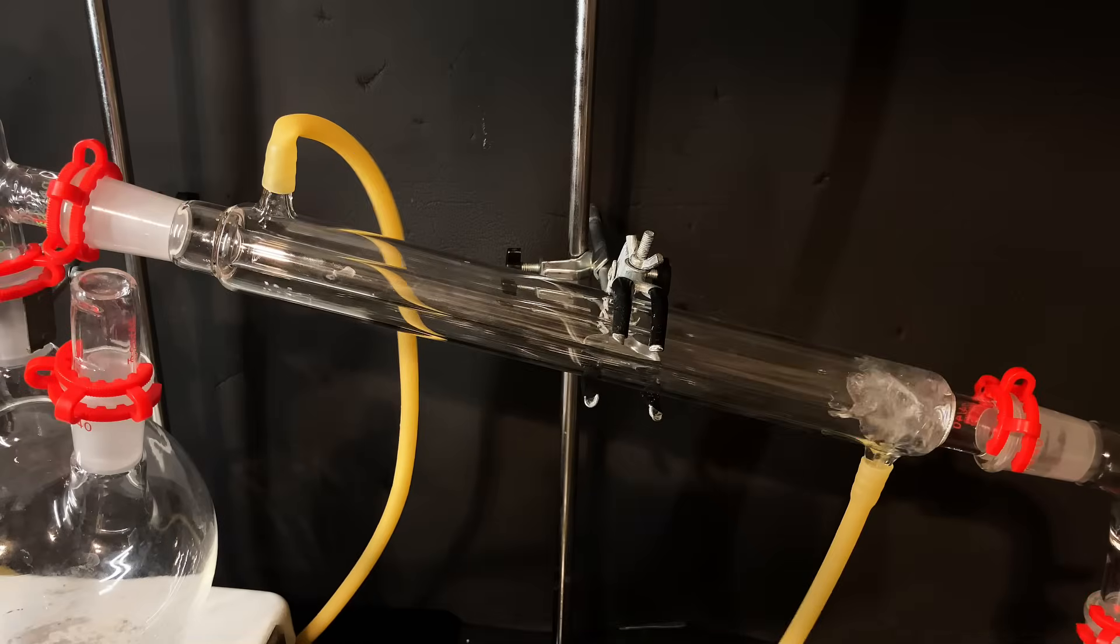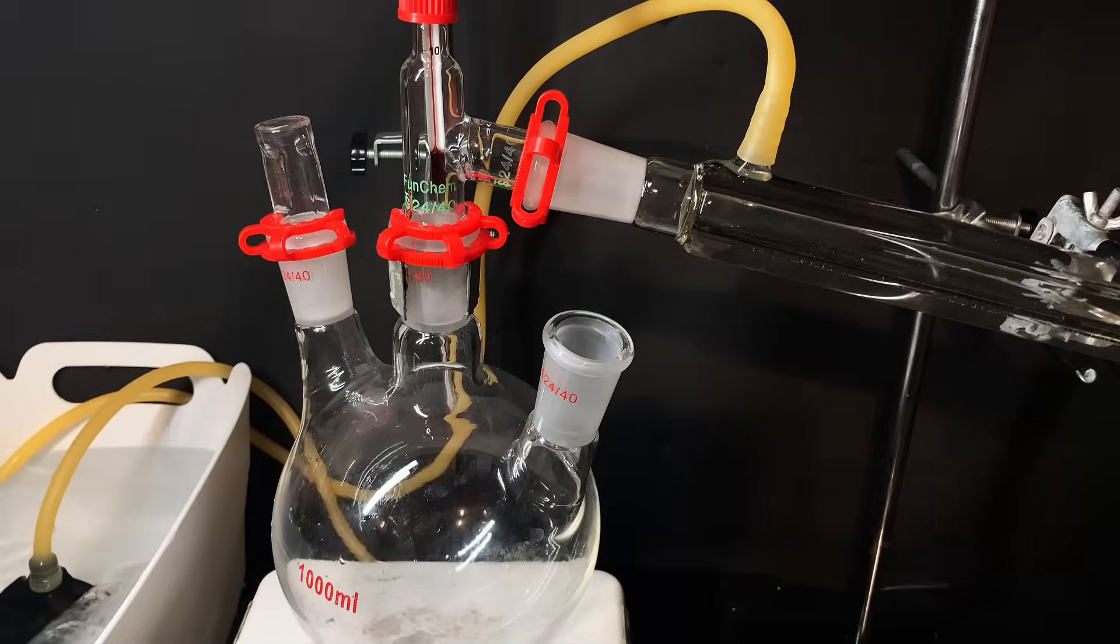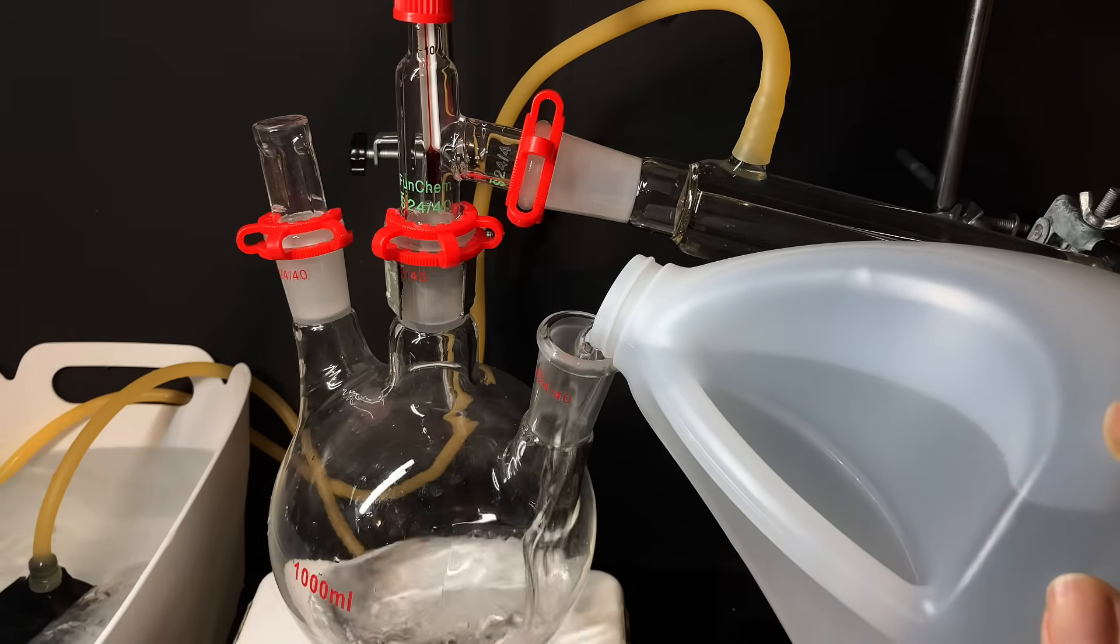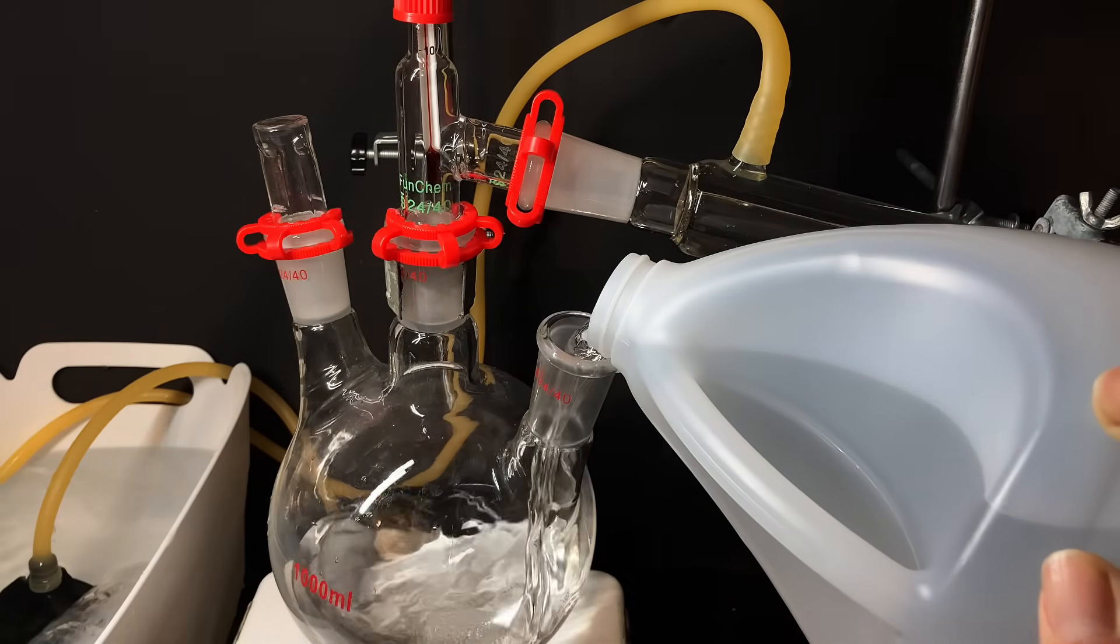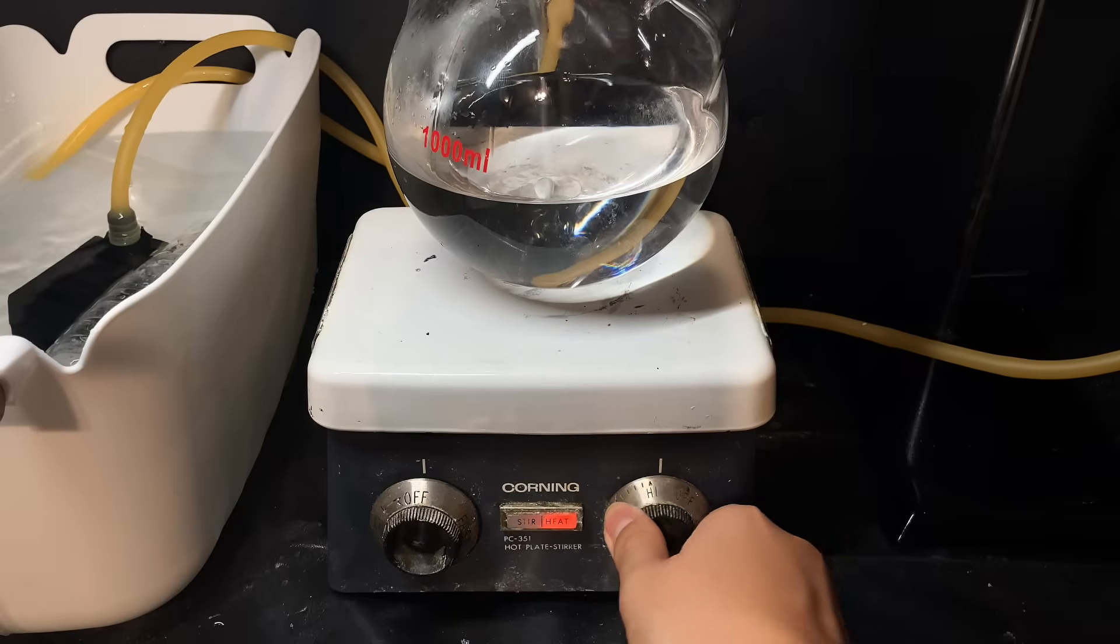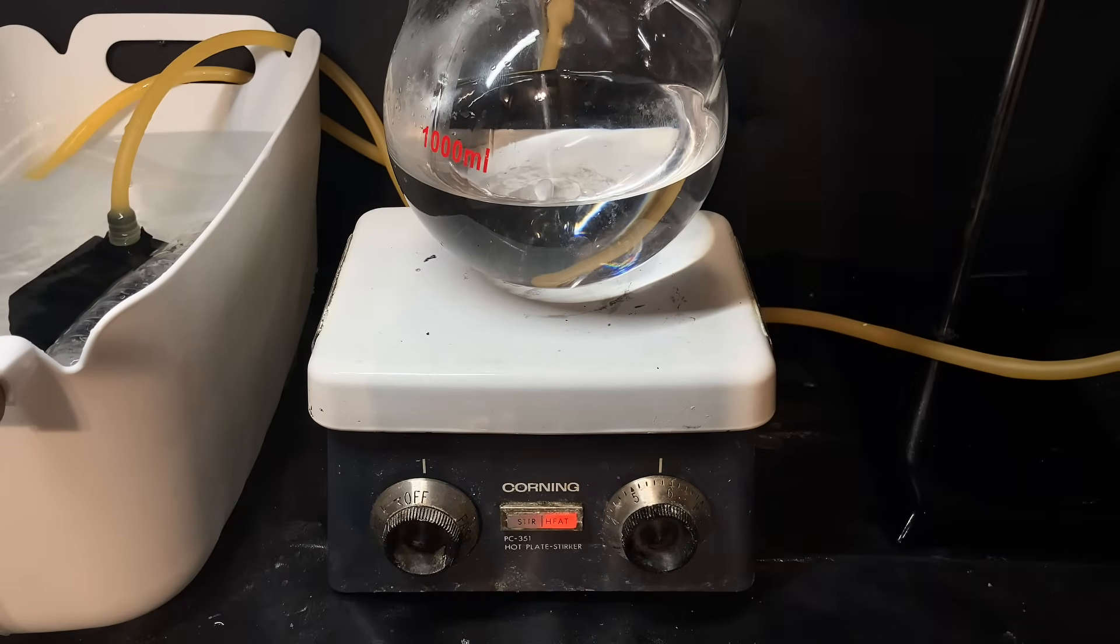I cracked open the jug and poured about 500 mils of the sanitizer into the 1 liter round bottom flask. You don't want to fill it up too much, usually not past half. When I felt it was all good, I dropped a stir bar into my flask and cranked up the heat to the highest setting to get the boiling started.